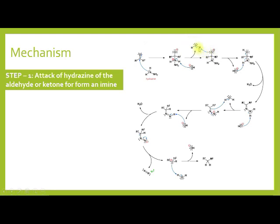The O⁻ again abstracts a proton, and another hydroxide anion is removed, forming an O–H bond. OH⁻ abstracts the proton again and removes it as a water molecule. The bonding electrons between hydrogen shift over, forming a C=N double bond, and the water molecule is removed — H⁺ from here, OH⁻ from there. This completes the imine (hydrazone) formation, where C=N is formed.